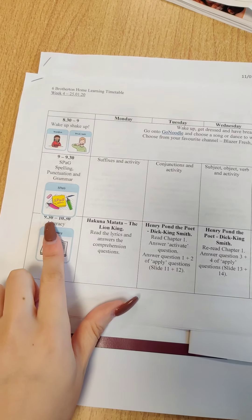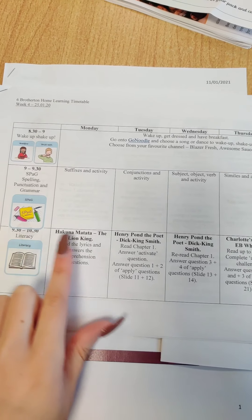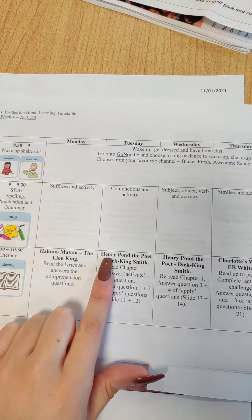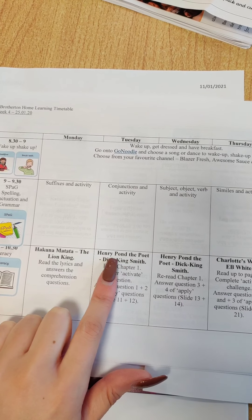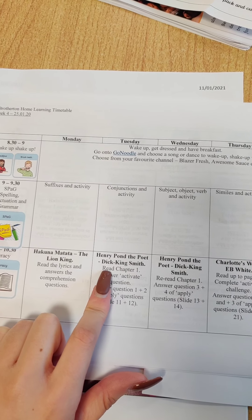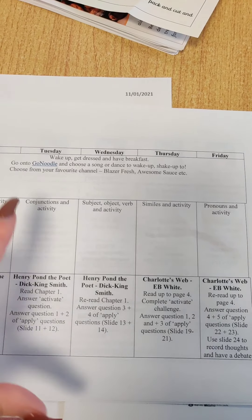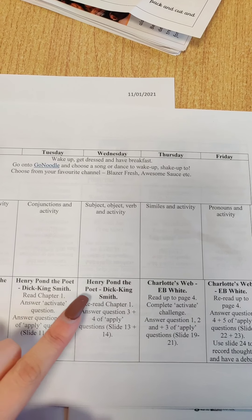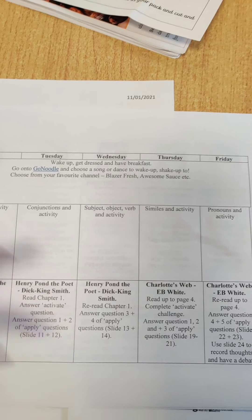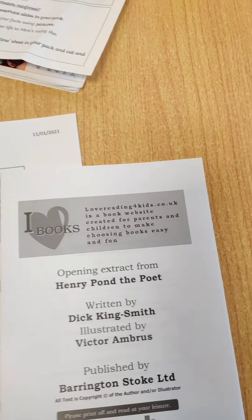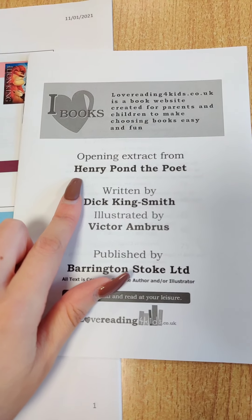For literacy today, I'm starting from half nine till half ten, and I need to read the booklet — that's Henry Pond the Poet by Dick King-Smith. To start off with, it tells me to read chapter one and then answer questions three and four of the apply questions. So I read my Henry Pond the Poet first.